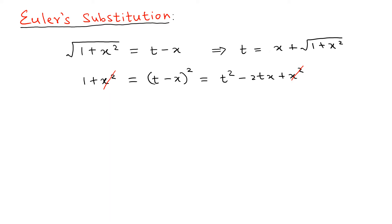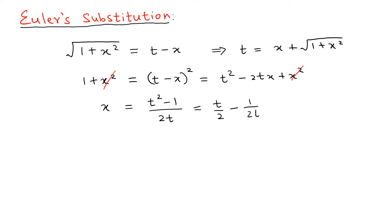Once you cancel out those terms, you can solve for x very easily. You get x equals t squared minus 1 divided by 2t. You can also split this as t over 2 minus 1 over 2t. Writing it in this split form is useful when you want to take the derivative term by term.